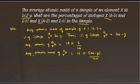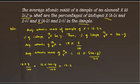The sum of the average atomic mass contributions of these isotopes will be equivalent to the total average atomic mass of the sample of element x. This can be written in mathematical form as: 18 multiplied by y upon 100, plus 16 multiplied by (100 minus y) upon 100, which is equivalent to the average atomic mass of the sample, that is 16.2.